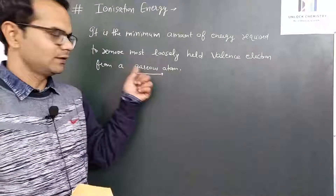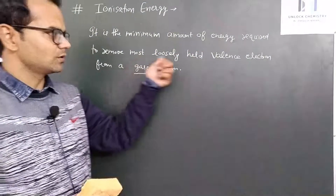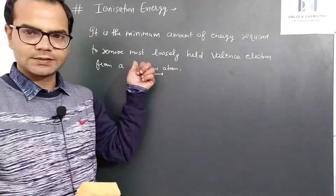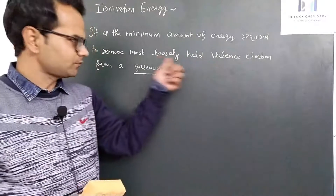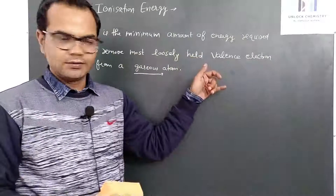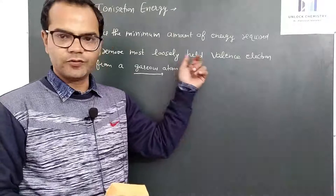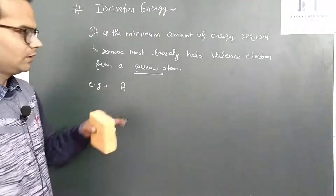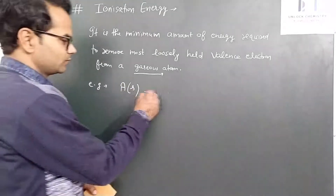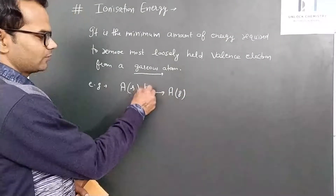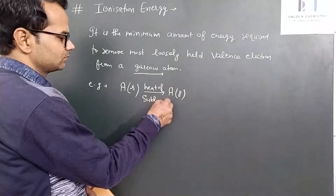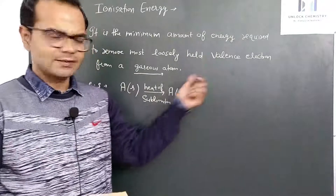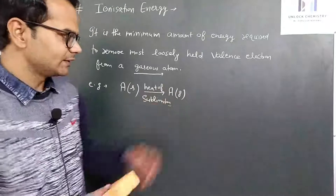Atoms can lose or gain electrons when they are in a gaseous form. The most loosely held valence electron means the attraction force with the nucleus must be minimum, so that it can be easily excited to the next energy shell or removed from the outer shell. For example, an atom in its initial state is present in solid state. First we convert it to gaseous state by giving heat of sublimation. Then to remove the most loosely held valence electron, a certain amount of energy is required — that energy is called ionization energy.